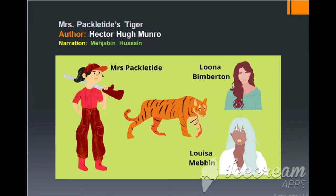Mrs. Packeltide was quite annoyed to hear the news and hoped that Louisa Mabin would keep her mouth shut. The news about Mrs. Packeltide shooting the tiger had spread far and wide, and the newspapers featured her photograph. The lady was elated. She sent a tiger claw brooch to Luna Bimberton just to spite her and invited her to a lunch party. Luna Bimberton, on her part, got so jealous of Mrs. Packeltide's success in killing a tiger that she refused to read the newspapers.